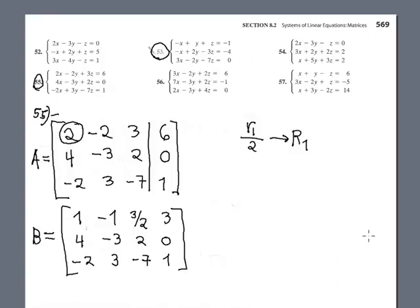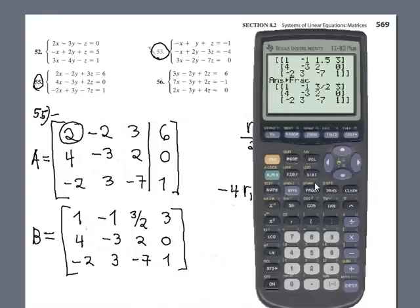Now the next row operation is I need 0 here. So you take the opposite number, because negative 4 multiplication by the pivot, because it is located in the row 1, plus row 2. Let's do it.